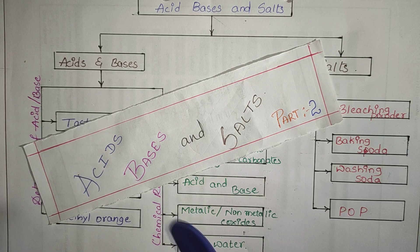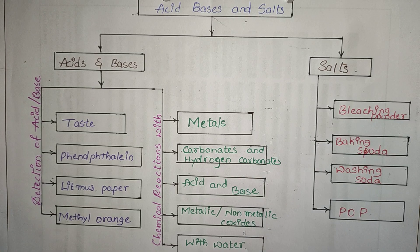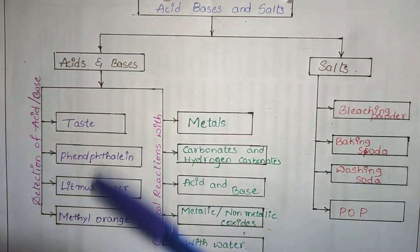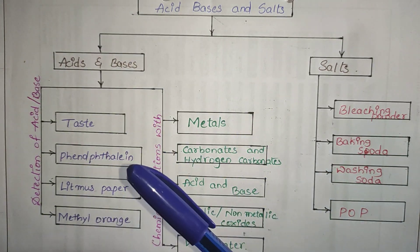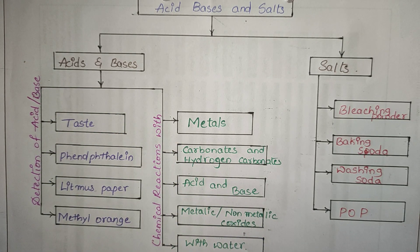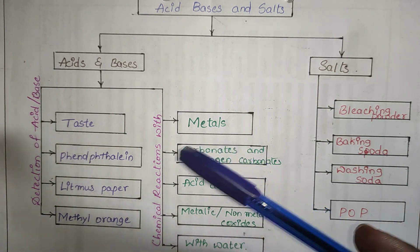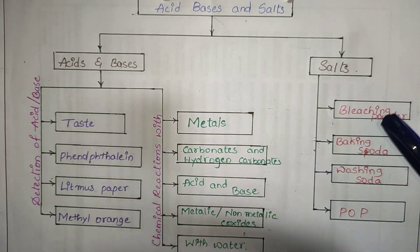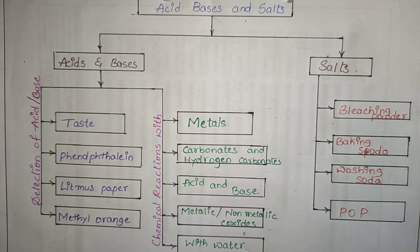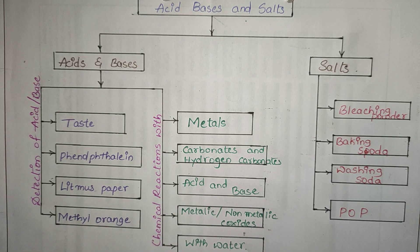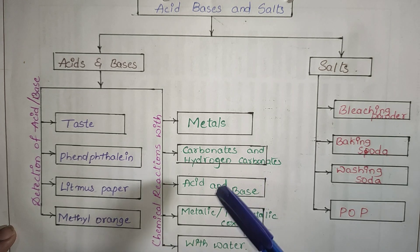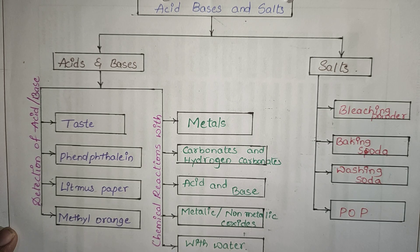Hello friends. This is the video on Acid, Bases and Salts Part 2, a continuation of the previous part. In the last part we saw about acids and bases — how to detect them by taste, using indicators like phenolphthalein, litmus paper, and methyl orange. We also covered chemical reactions with metals liberating hydrogen gas, carbonates and hydrogen carbonates liberating CO₂, neutralization, metallic oxides, non-metallic oxides, and how acids and bases react with water.